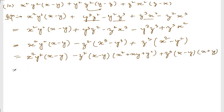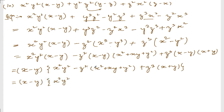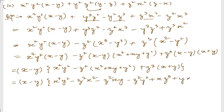From all these terms I can take x minus y common. If I take x minus y common, I can write x² y² minus z²(x² + xy + y²) plus z³(x + y). Expanding: minus z² x² minus z² xy minus z² y² plus x z³ plus y z³.